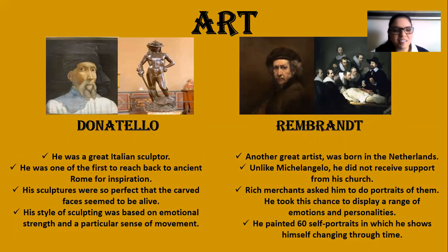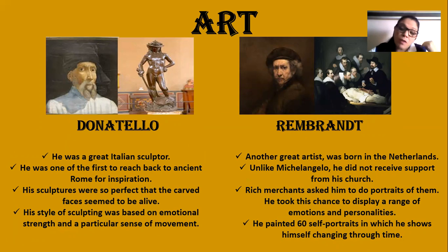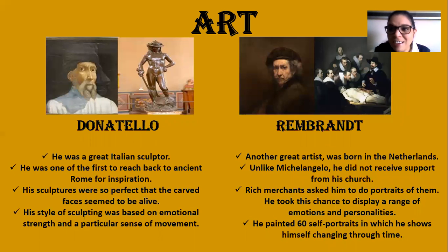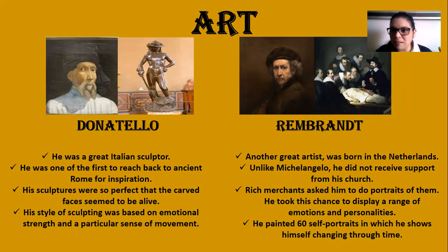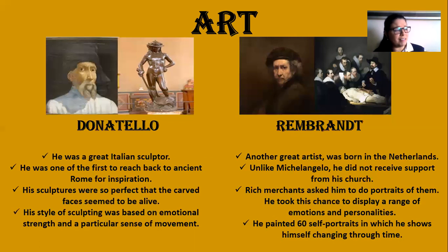The other artist is Donatello, a great Italian sculptor who was the first to reach back to ancient Rome for inspiration. His sculptures were so perfect that the carved faces seemed to be alive. He had the custom of talking to his sculptures once they were finished — it seemed crazy, talking to a marble statue. His style of sculpting was based on emotional strength and a particular sense of movement. They seemed to be alive. He even started doing plays with his sculptures.